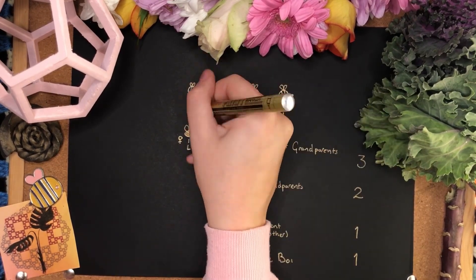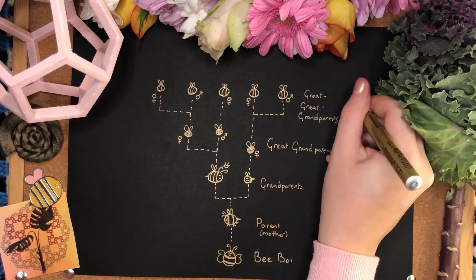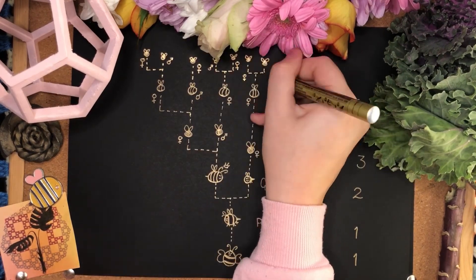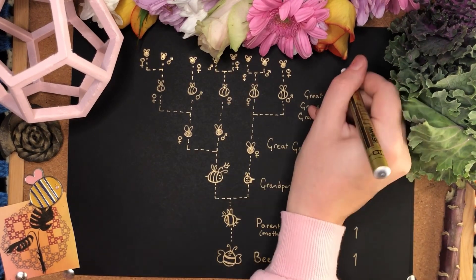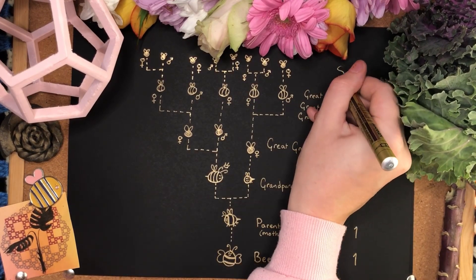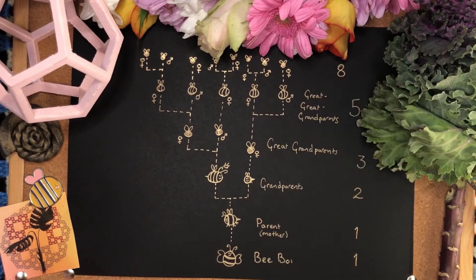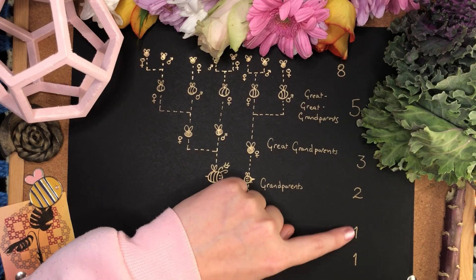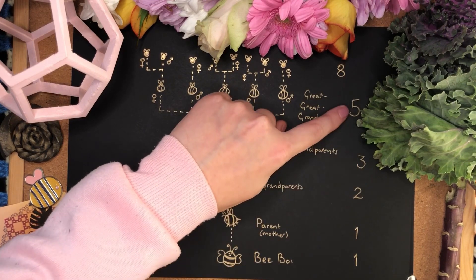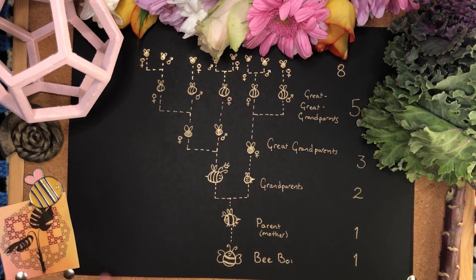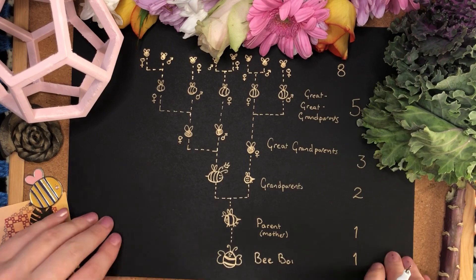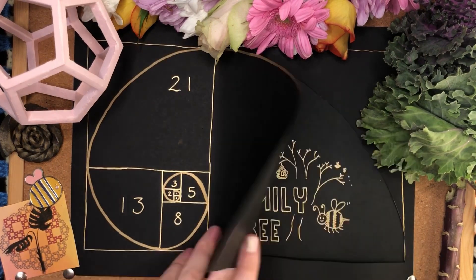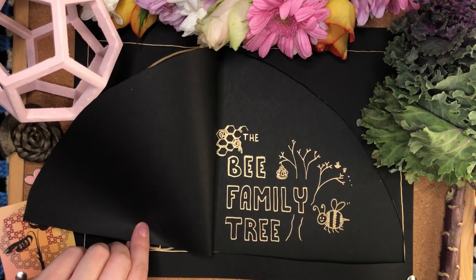Which means B-Boy has three great-grandparents. And if we continue this on, we can see that there are five great-great-grandparents and eight great-great-great-grandparents. So we have one, one, two, three, five — and we have arrived, as you can see, at the Fibonacci family tree of the male honeybee.